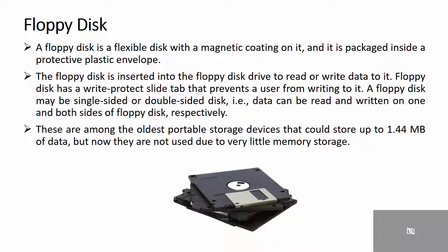Floppy disk. A floppy disk is a flexible disk with a magnetic coating on it, packed inside a protective plastic envelope. The floppy disk is inserted into a floppy disk drive to read or write data on it. A floppy disk may be single-sided or double-sided, meaning data can be read and written on one or both sides respectively.